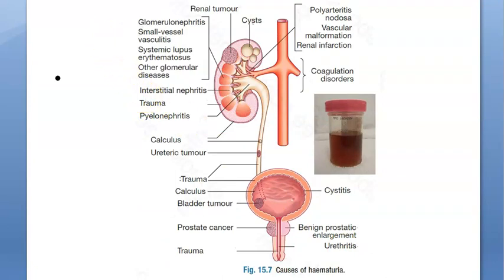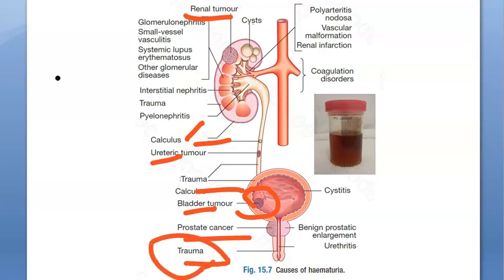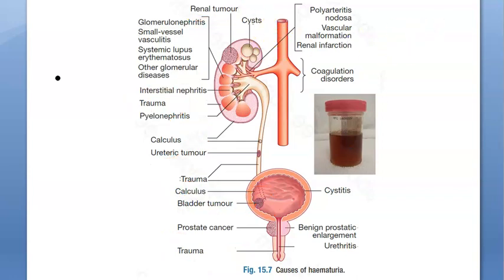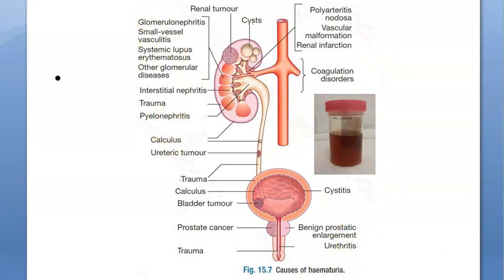Renal calculus, ureteric calculus, bladder calculus, bladder tumor. Tumor appears in three places: tumor in the kidney, tumor in the ureter, and tumor in the bladder. Cancer of the prostate and trauma are also listed. Other causes include polyarteritis nodosa, vascular malformation, renal infarction, coagulation disorders, cystitis (which is UTI/infection), benign prostatic enlargement, and urethritis.